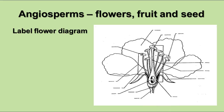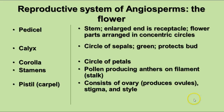That's true with ferns too. The only one where the gametophyte is the most recognizable form is the non-vascular plants — the bryophytes. Flowers have lots of different parts. The pedicel is the name for the stem of the flower. The enlarged end as it reaches the flower itself is called the receptacle. The calyx is the circle of sepals — usually green, they protect the bud. The corolla is the term for the circle of petals.